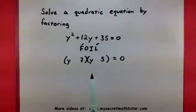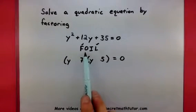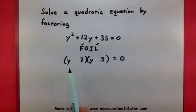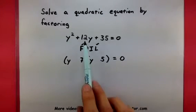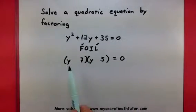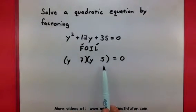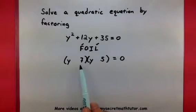Now, one last thing to do when using a reverse FOIL is to check that my outside and my inside terms combine in just the right way to give me a 12. So, y times 5 would give me a 5y. 7 times y would give me a 7y. And 5y plus 7y equal 12y.